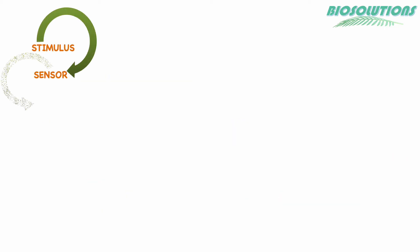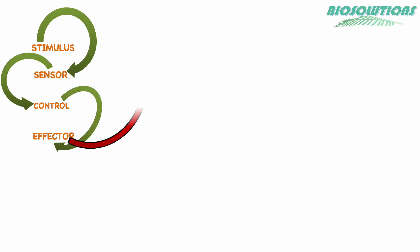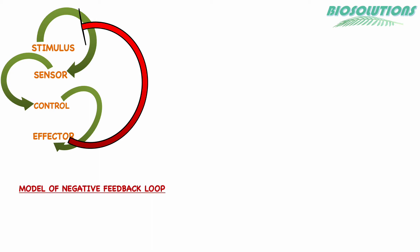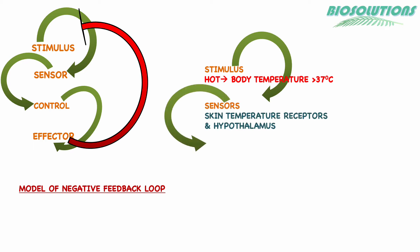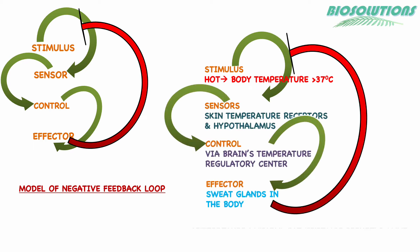Negative feedback system is like fine tuning — it stops and reverses the initial change. For example, the body may instruct to stop synthesizing a new hormone or enzyme as it's no longer required and excess may cause harm. Or like in thermoregulation, heat raises body temperature and skin receptors and the hypothalamus sense this, and the brain induces sweating.